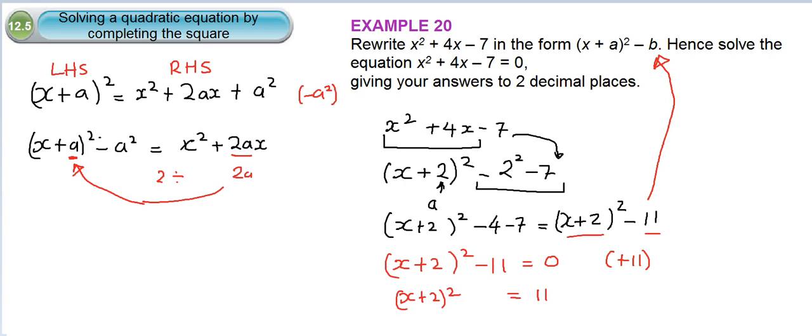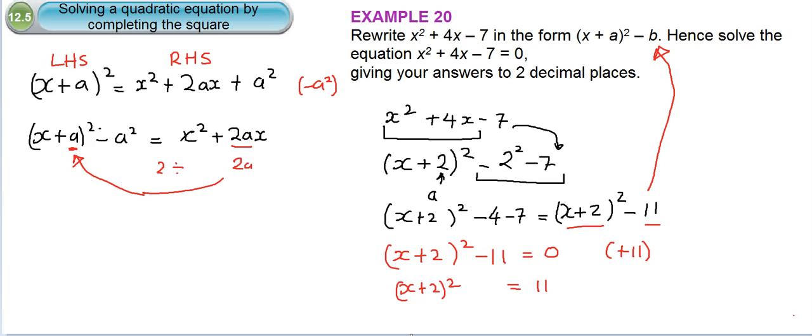Let's scroll down a little bit. So we have... If I take the square root of both sides, we have x plus 2 equals... Because this is a quadratic equation, we have two solutions. So it's plus or minus root 11.